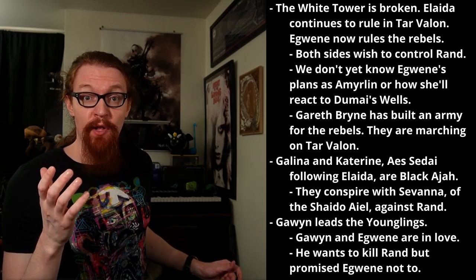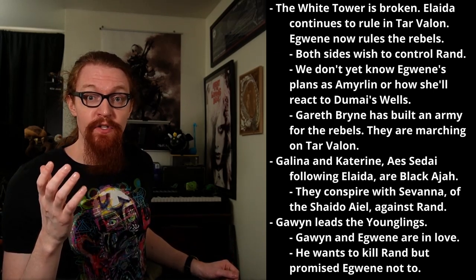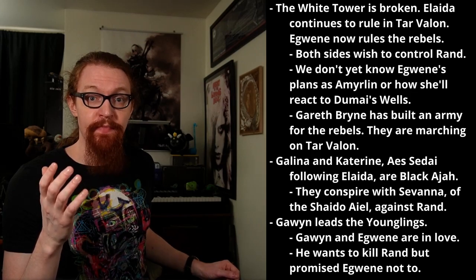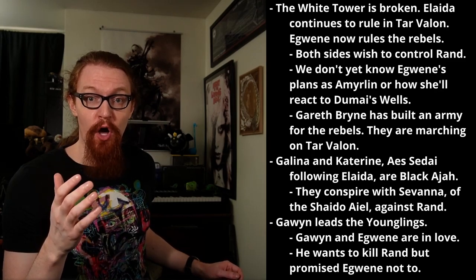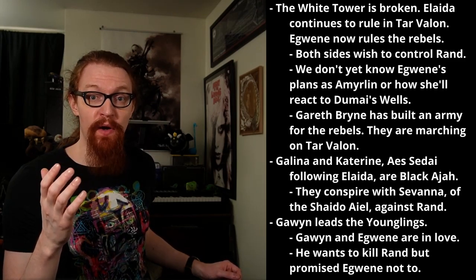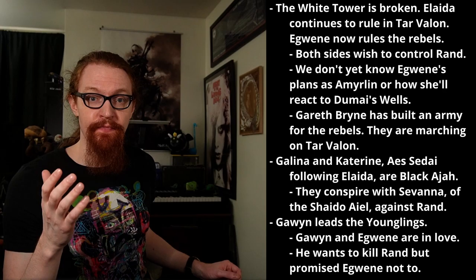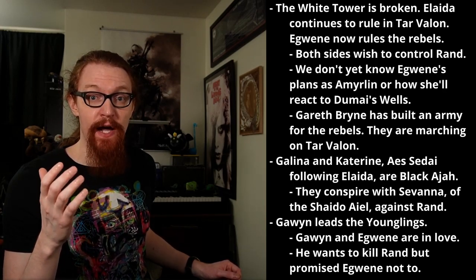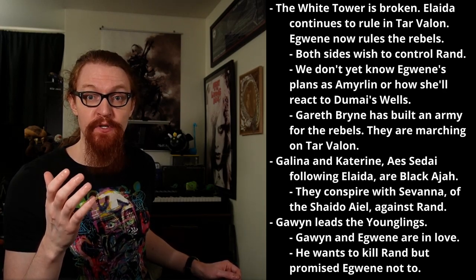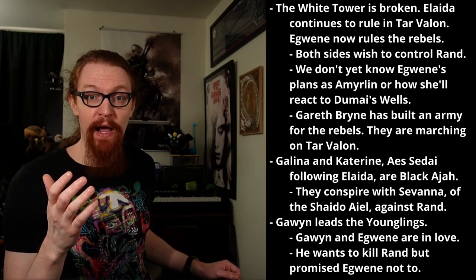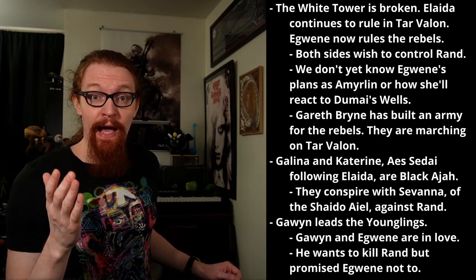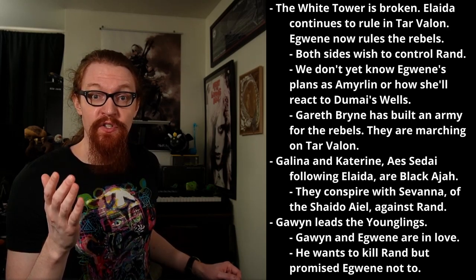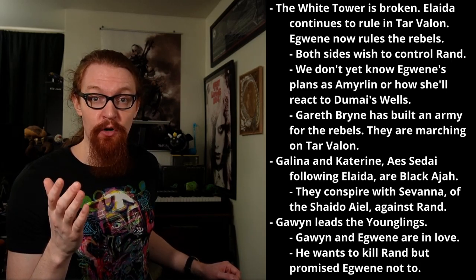Gareth Bryne has built a large army for the rebel Aes Sedai, and by the end of Lord of Chaos Egwene has the rebels marching on Tar Valon. Galina and Katerine, Aes Sedai following Elaida, are Black Ajah — right away in the prologue they are conspiring with Sevanna, a Wise One of the Shaido Aiel, against Rand. Gawyn leads the younglings for Elaida. Elaida's Aes Sedai continually consider options to dispose of him. Gawyn blames Rand for rumors of Morgase's death and vows to kill him, but Egwene got Gawyn to vow to try not to kill Rand, which stays his hand for now.